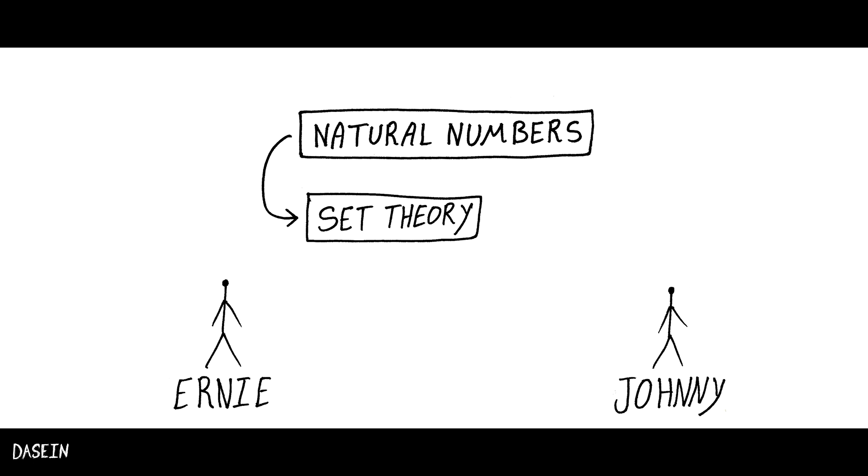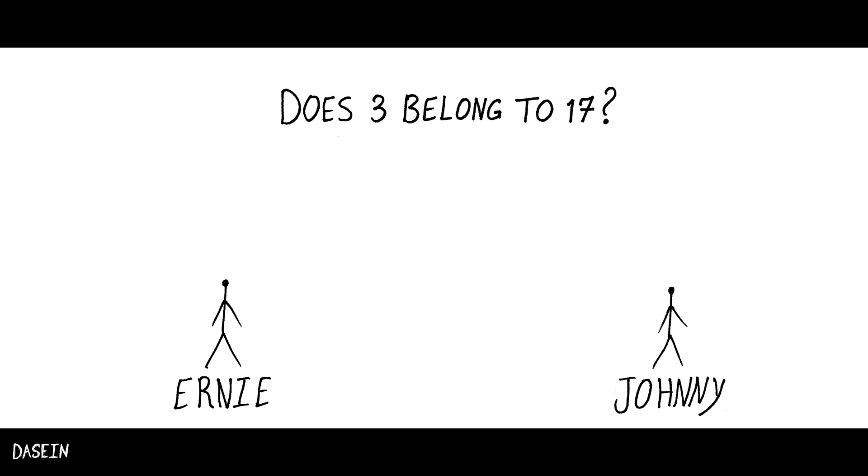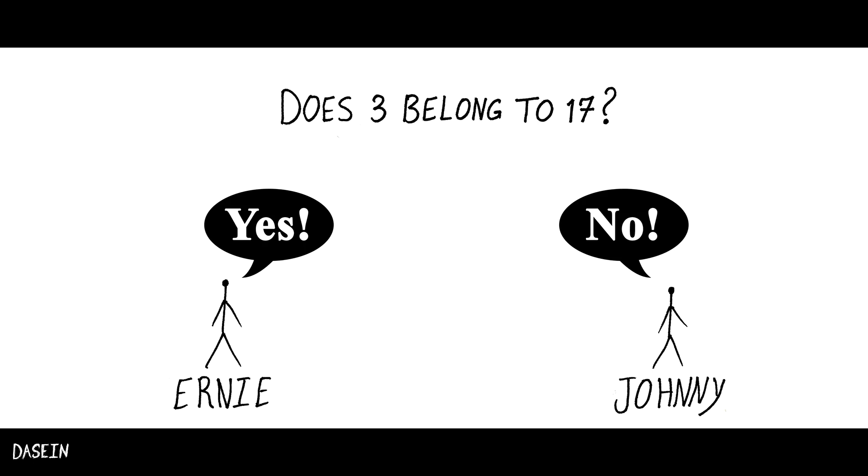However, when they start to prove theorems about numbers, they face an unexpected dilemma. They cannot agree whether 3 belongs to 17 or not. Ernie is convinced that it does, but Johnny is convinced that it doesn't.